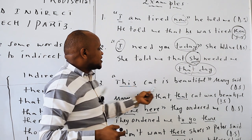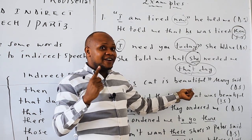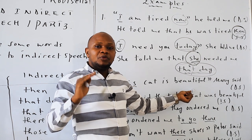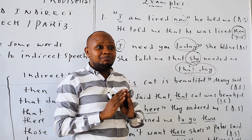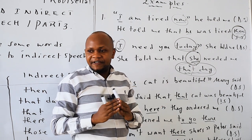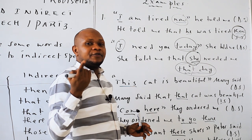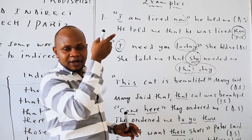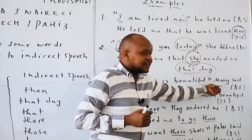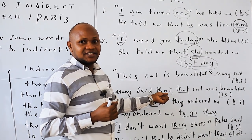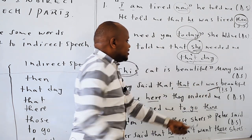Next example: 'This cat is beautiful.' Mary said that that cat was beautiful. So 'this' changes to 'that.' Mary said that that cat was beautiful.